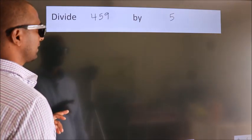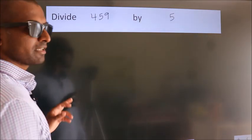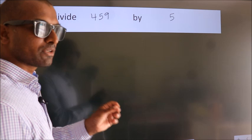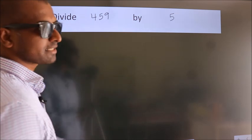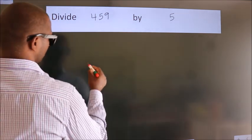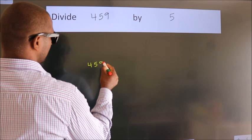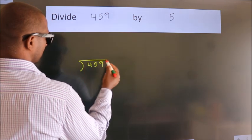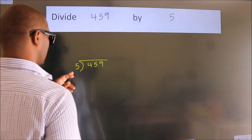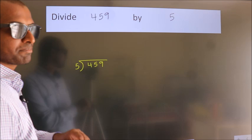Divide 459 by 5. To do this division we should frame it in this way: 459 here, 5 here. This is your step 1.